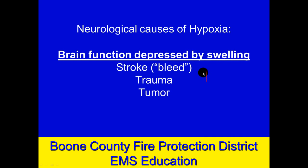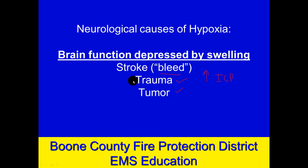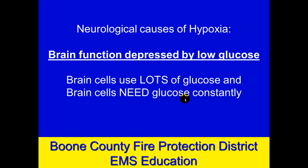Brain function can also be depressed by swelling inside the skull — an elevation in intracranial pressure, or ICP. That can happen from a hemorrhagic stroke, which is a bleed in the brain. In the skull there are only supposed to be three things: brain tissue, blood inside blood vessels, and a little cerebrospinal fluid. There should be no blood outside vessels, no tumors, no foreign objects. Direct injury to the brain — from a medical cause like a bleed, a traumatic cause, or a tumor — can depress brain function, typically causing a slower respiratory rate, adding to problems with hypoxia.